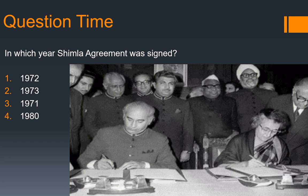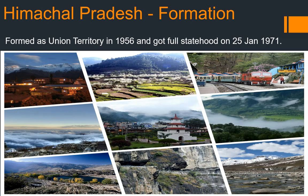First of all, I would like to ask you all a question: in which year was the Shimla agreement signed? Do write your answer in the comment section below and I will tell you the correct answer at the end of the video. So let's begin with the formation of Himachal Pradesh. It was formed as a union territory initially in 1956 and then later on 25th January 1971, it was made a full state.